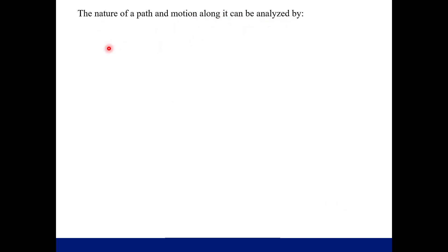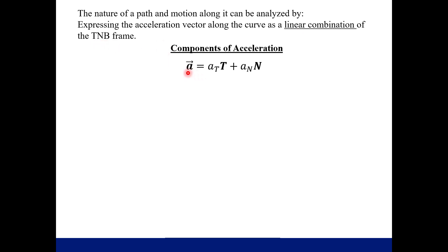The nature of a path and motion along it can be analyzed by expressing the acceleration vector as a linear combination of T and N. Our acceleration vector a can be written as a_T times T plus a_N times N — some scalar multiple of the unit tangent vector plus some scalar multiple of the unit normal vector. The scalars a_T and a_N are the tangential and normal scalar components of acceleration.